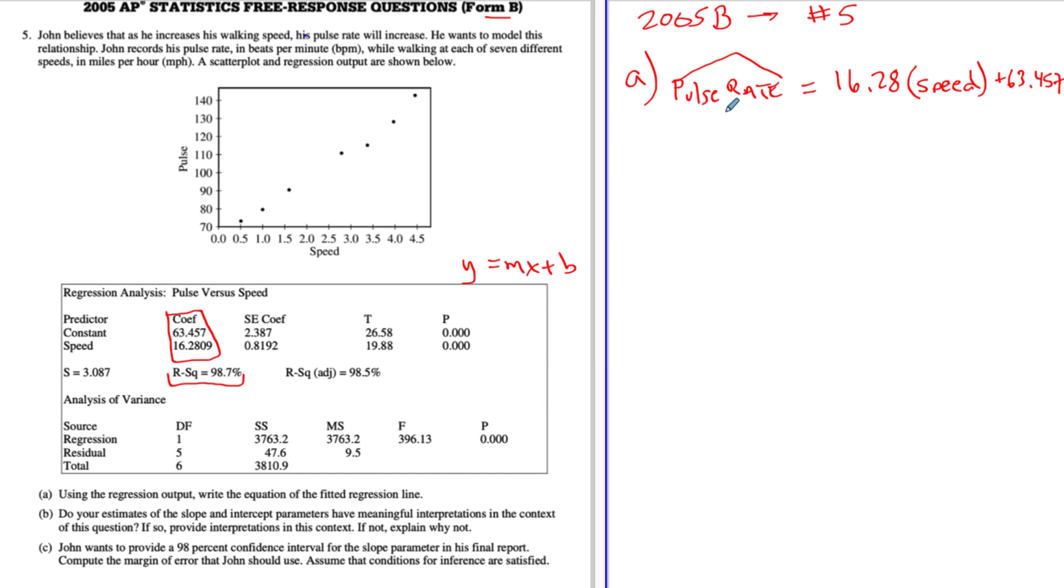Okay, so that is the equation. Anything else? I guess we could put beats per minute here. Beats per minute. So our units, beats per minute and miles per hour. So part B.